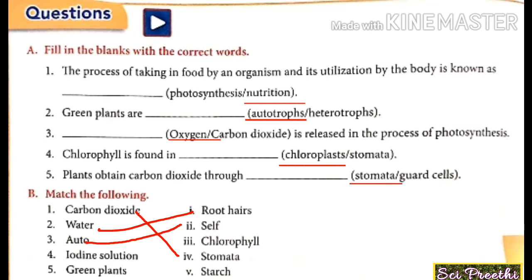The fourth match: iodine solution — used to show that chlorophyll is necessary for photosynthesis. In this activity, when iodine solution is dropped on the leaf surface, it reacts with starch to turn blue-black, confirming that chlorophyll is necessary for photosynthesis. The answer is starch.